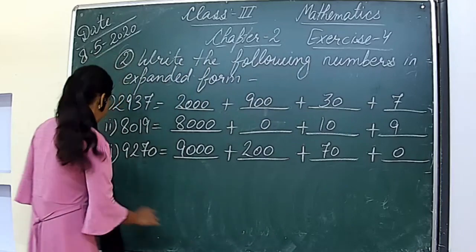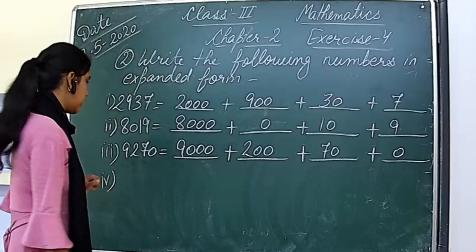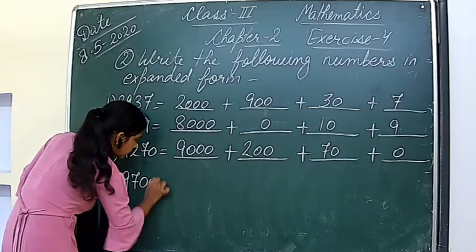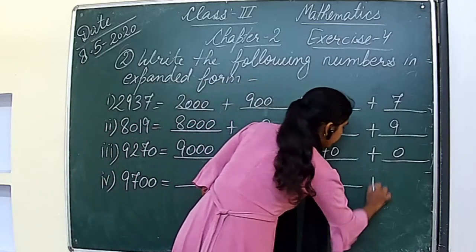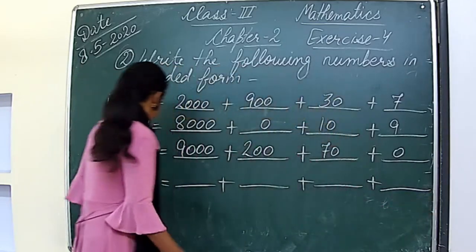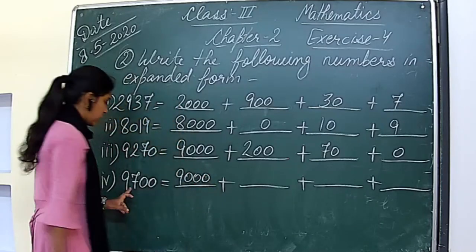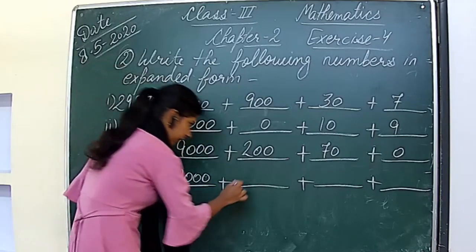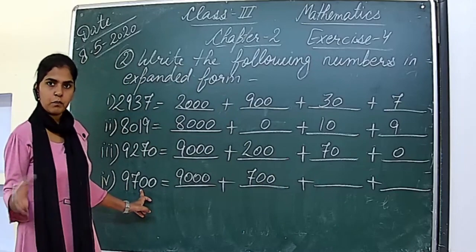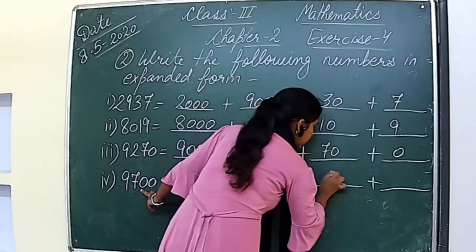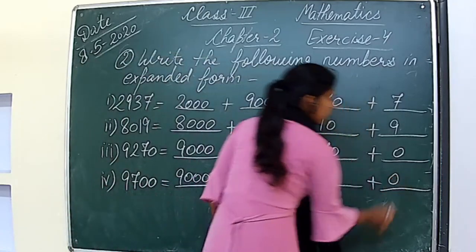The fourth part is 9700. Let's start writing its expanded form. Place value of 9 is 9000. Place value of 7 is 700. Place value of 0 is 0 — place value of 0 is always 0. Again, place value of the second 0 is also 0.